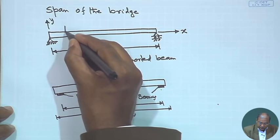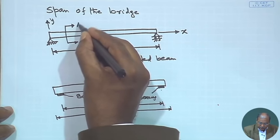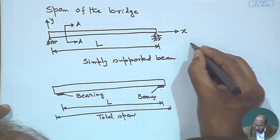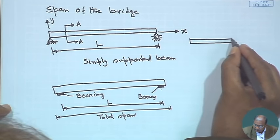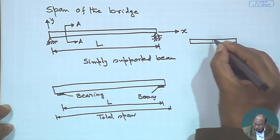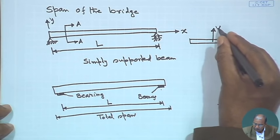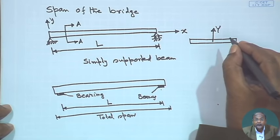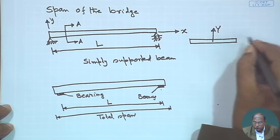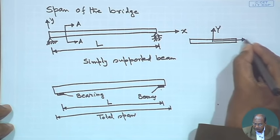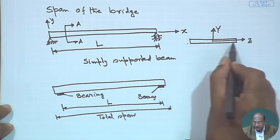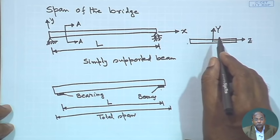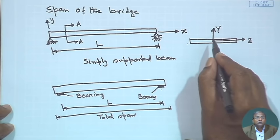If we take a cross section AA, we find the deck part where the normal to the page is the x-axis, and we have the z-axis as well. The cross section will be in the y-z plane, the longitudinal section will be in the x-y plane, and the plan will be in the z-x plane.